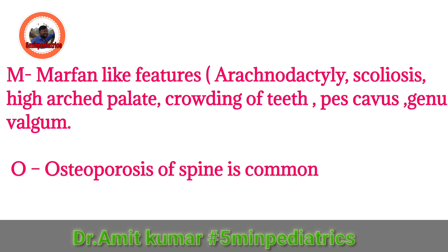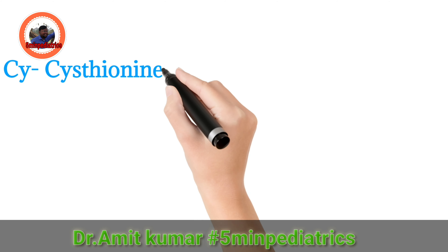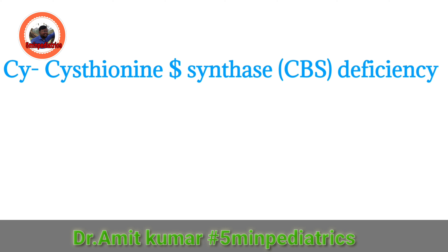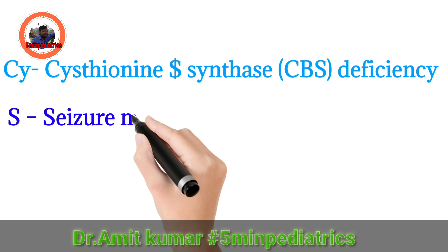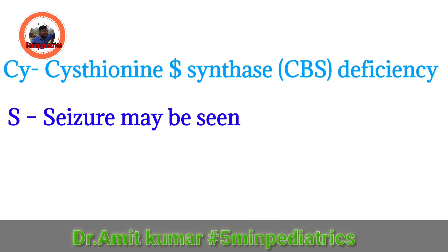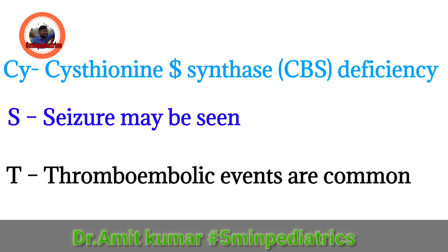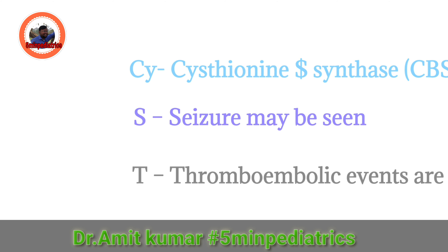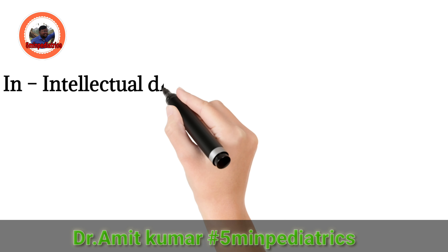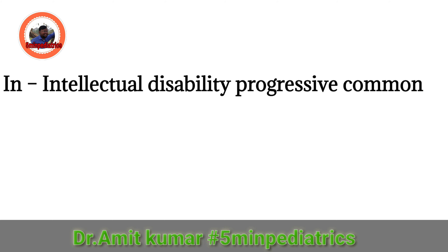C stands for cystathionine beta-synthase (CBS) deficiency, which is the underlying enzyme defect. S stands for seizures, which are also present in these patients. T stands for thromboembolic events, which are also common in homocystinuria.